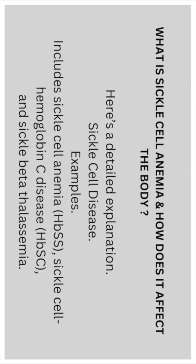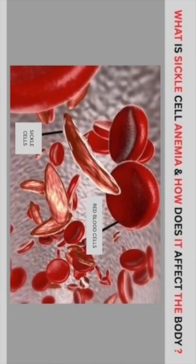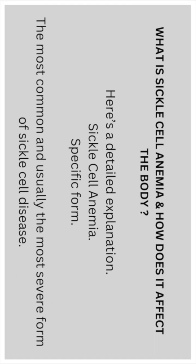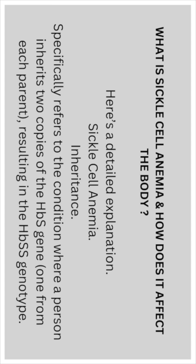Examples of sickle cell disease include sickle cell anemia (HbSS), sickle cell hemoglobin C disease (HbSC), and sickle beta-thalassemia. Sickle cell anemia is the most common and usually the most severe form. It specifically refers to the condition where a person inherits two copies of the HbS gene, one from each parent, resulting in the HbSS genotype.